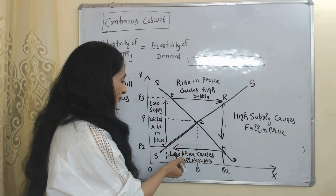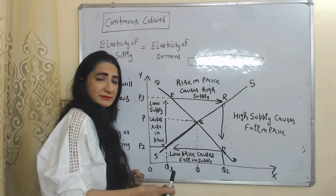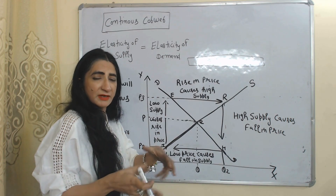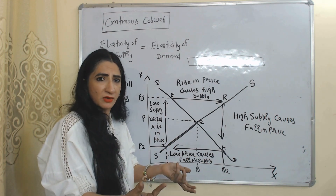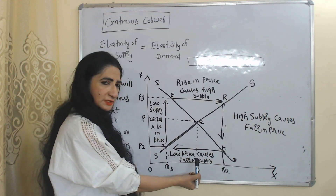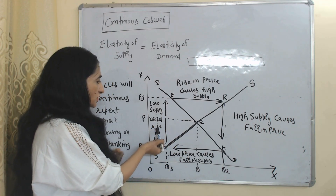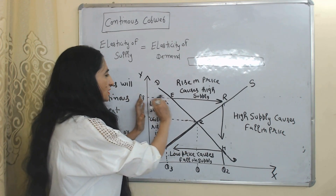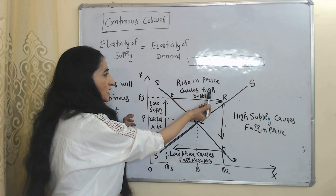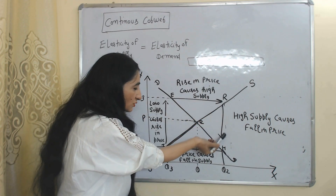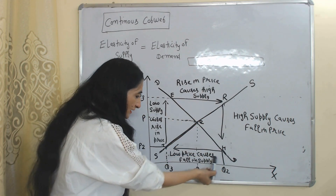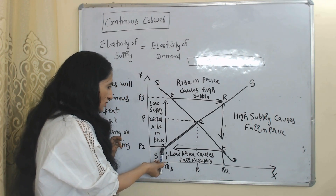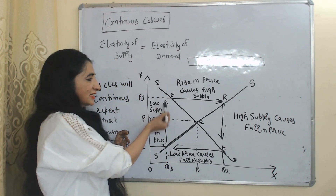But when supply exceeds demand, prices fall. So high supply causes a fall in price. Low prices then cause a fall in supply — when prices are very low, the profit of the producer is less, so they will reduce supply. Low price causes a fall in supply, but low supply causes a rise in price. So there is one complete cycle: rise in price → high supply → fall in price → fall in supply → rise in price.